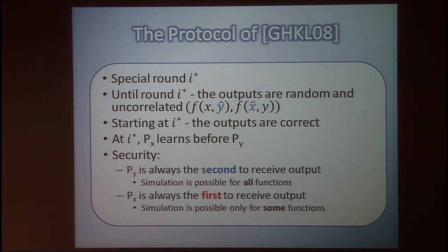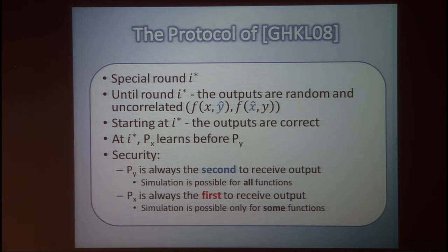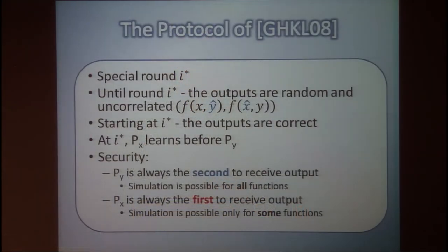Regarding security: P_Y is always the second to receive output, and therefore simulation is easy and possible for all functions — fairness is not an issue when the corrupted party is Y. But we do have a problem when the X-party is the first to receive an output, since it learns the output before the Y-party. Simulation is possible only for some functions — we cannot simulate this protocol for all functions.